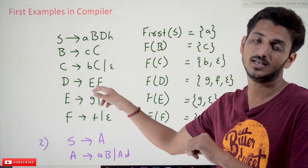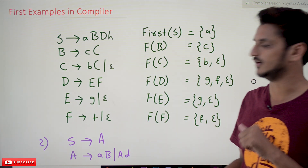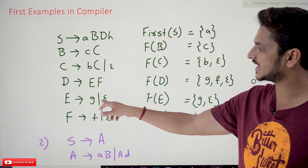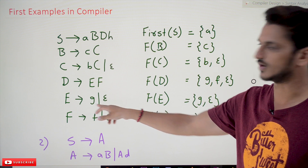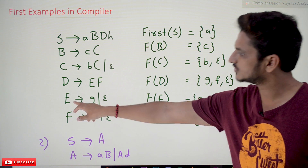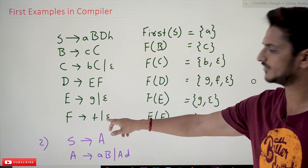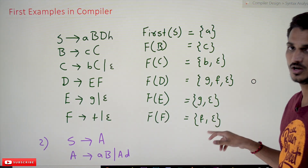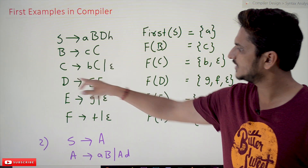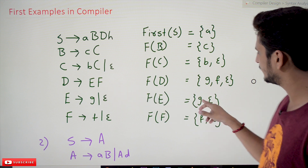Now coming to the next one: FIRST(D) — we will calculate it using FIRST(E). First we have to calculate FIRST(E). FIRST(E) = {G, epsilon}, since G is a terminal symbol and epsilon is also possible. FIRST(F) = {F, epsilon}. Now coming to the FIRST of D: FIRST(D) depends on FIRST(E).